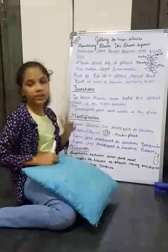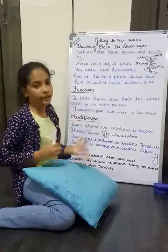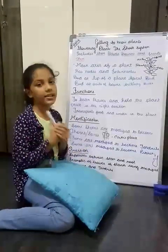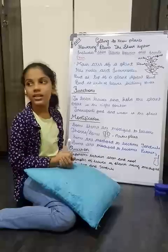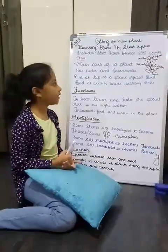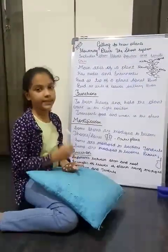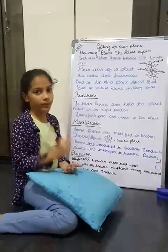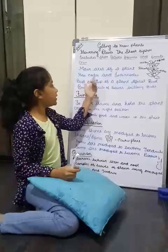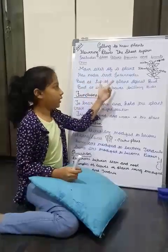So what is a stem? Today we are going to talk about the stem. Stem is the main axis of the plant — it is the main part of the plant. It has nodes and internodes.